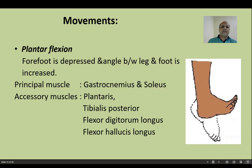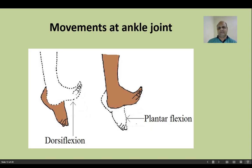To summarize movements: the main muscle for dorsiflexion is tibialis anterior, while the main muscles for plantarflexion are gastrocnemius and soleus. The dotted portions in the diagram represent the dorsiflexed position and the plantarflexed position respectively.